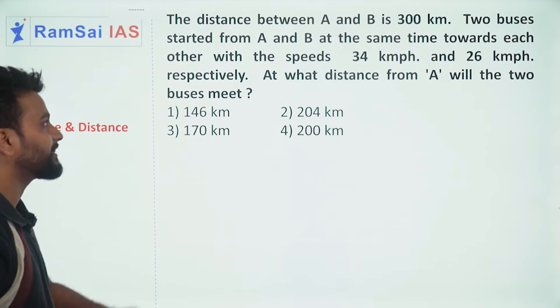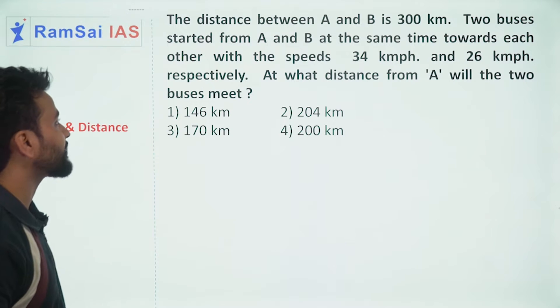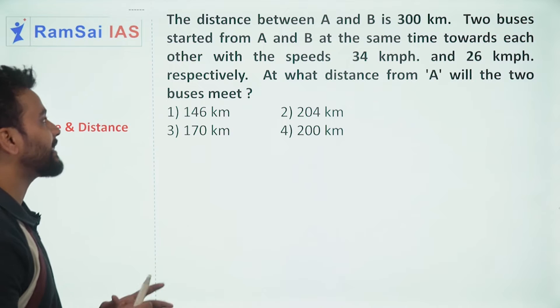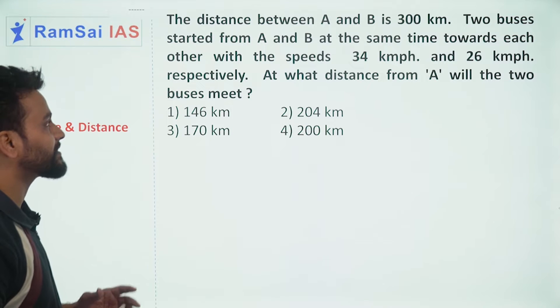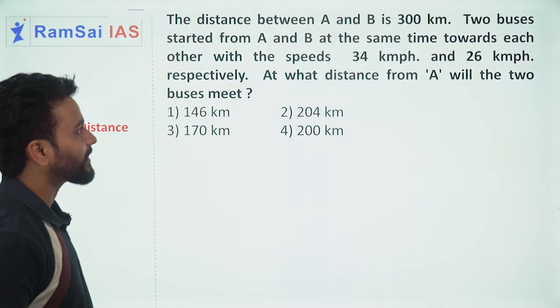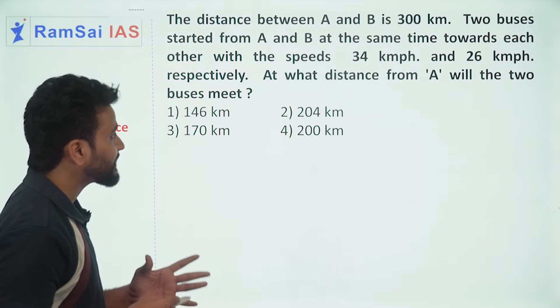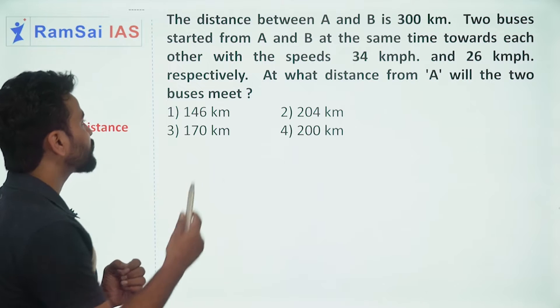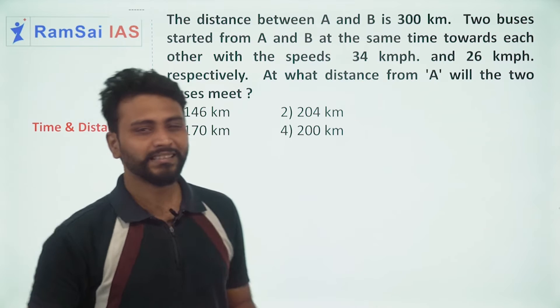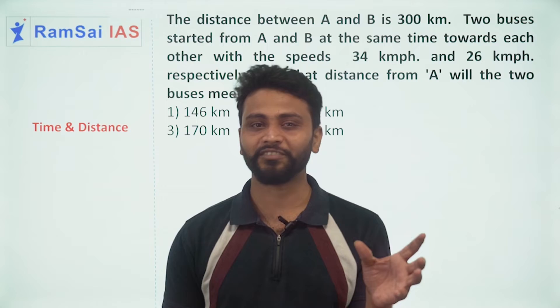The distance between A and B is 300 kilometers. Two buses started from A and B at the same time towards each other with speeds of 34 kilometers per hour and 26 kilometers per hour respectively. At what distance from A will the two buses meet each other? This is a modification of the previous question.